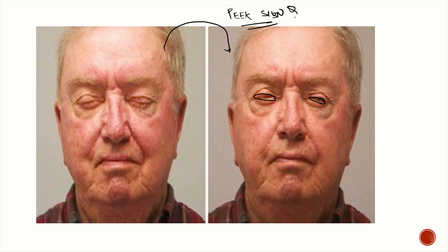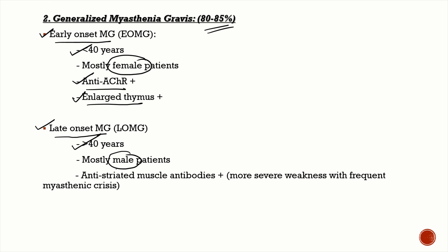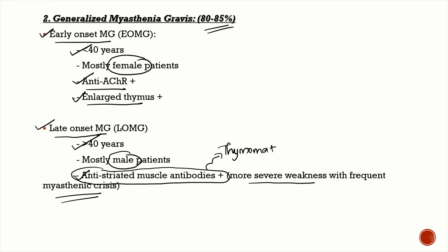Generalized myasthenia gravis accounts for 80–85% of patients. Early-onset MG (under 40 years) predominantly affects females and these patients tend to be seropositive for anti-acetylcholine receptor antibodies and have thymic abnormalities like thymoma or thymic hyperplasia. Late-onset MG (after 40 years) more commonly involves males, who tend to be positive for anti-striated muscle antibodies and have more severe weakness with frequent myasthenic crises.